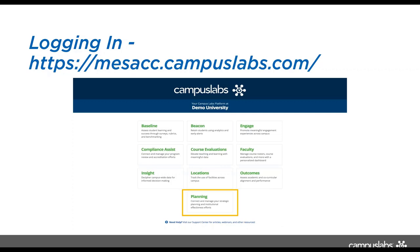Right now your old way of getting access will still be functioning, but we would like you to think about transitioning to logging in from your main Campus Labs homepage, as planning is now its own tool in the system. You'll see the URL for your Campus Labs landing page, and when you log in with those same credentials, you'll see a tile that says Planning.